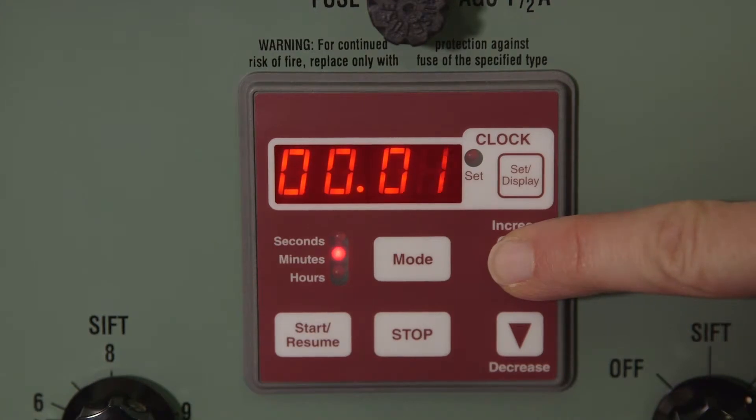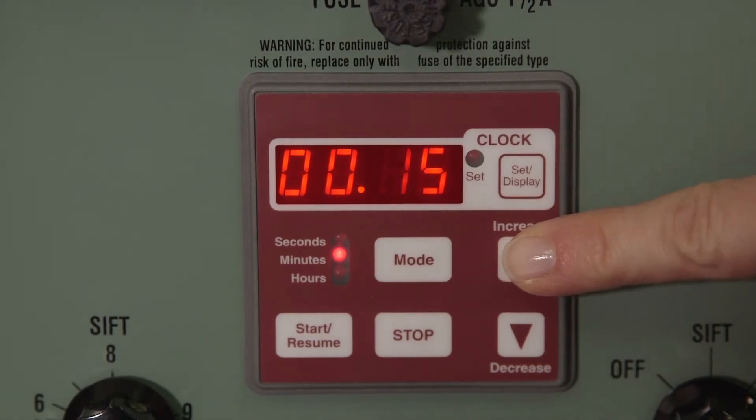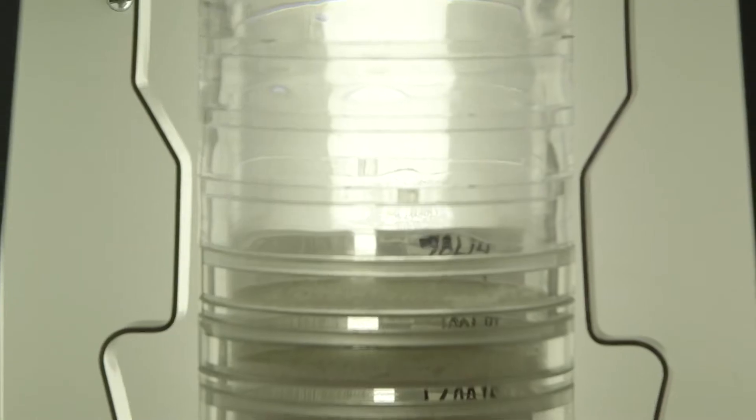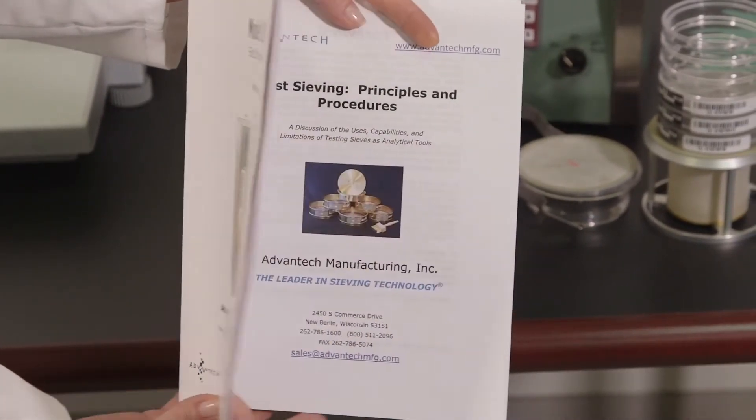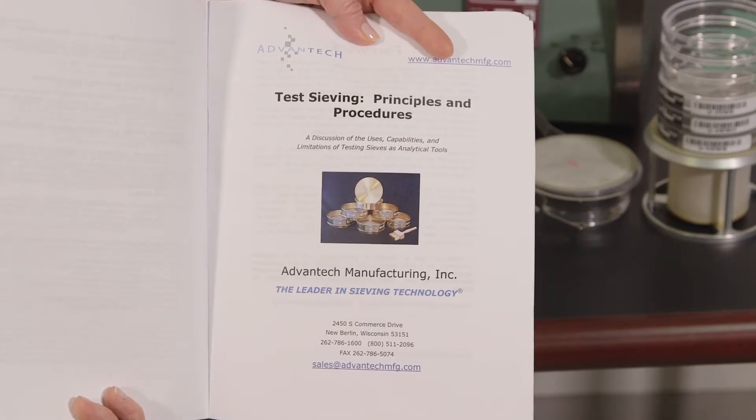The L3P timer has three modes of operation: seconds, minutes, and hours. Press and hold the mode button for one second. The LED will illuminate which mode is engaged. Set your countdown value by using the increase-decrease buttons.